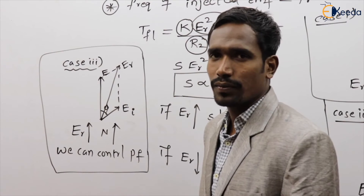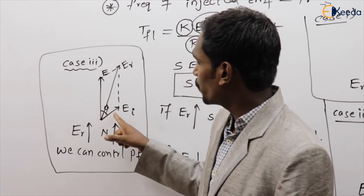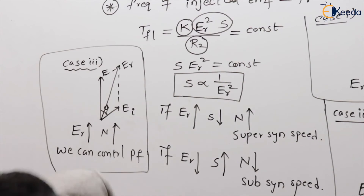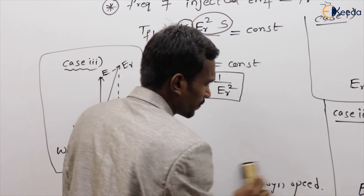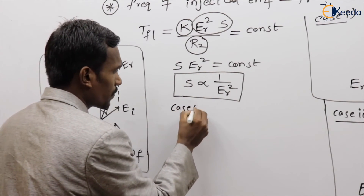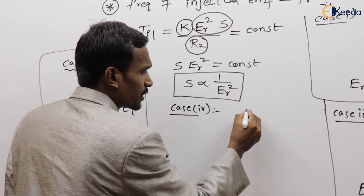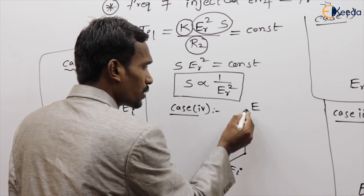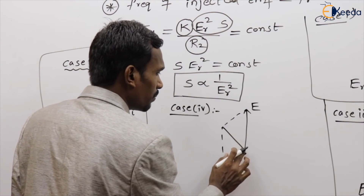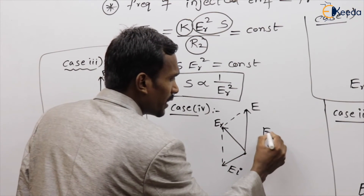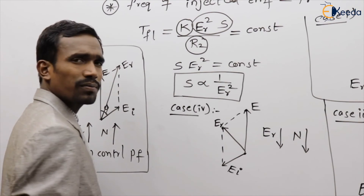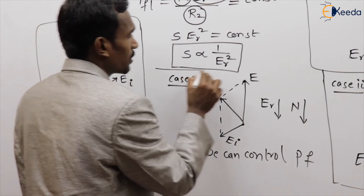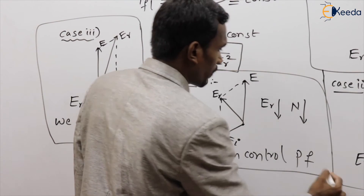Case four: the EMF is injected into the rotor out of phase with some angle. The resultant EMF reduces, and therefore speed also reduces. However, here too we can control the power factor — this is a key advantage of injecting EMF at an angle.